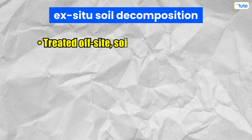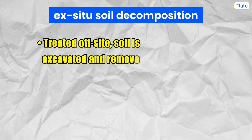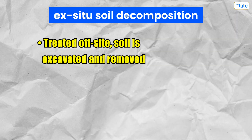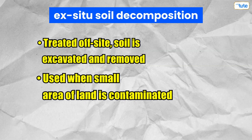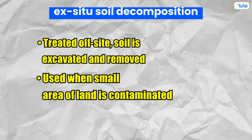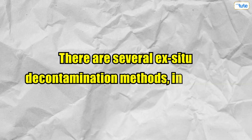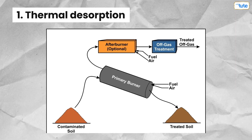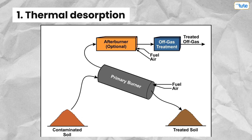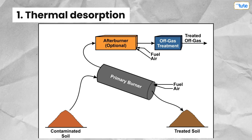Ex-situ soil decontamination, on the other hand, involves removing the contaminated soil from the site and treating it elsewhere. This method is typically used when the contamination is severe, or when the volume of contaminated soil is small enough to make excavation and removal feasible. One ex-situ method is Thermal Desorption, which involves heating the contaminated soil to a high temperature to vaporize the contaminants, which are then collected and treated.